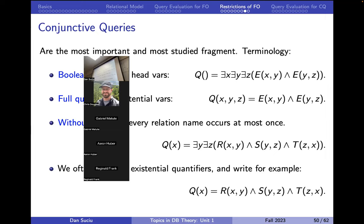We still have 12 minutes, so let's at least start the discussion of conjunctive queries. For conjunctive queries, a bit more terminology: we call a query a Boolean query if all variables are existentially quantified — technically it's a sentence with no free variables. We call it a full query if there are no existential variables — all variables are free. Look at the difference: a Boolean query returns true or false, checking if there exists some path of length two. A formula with free variables x, y, z returns all triples of nodes that form a path of length two.